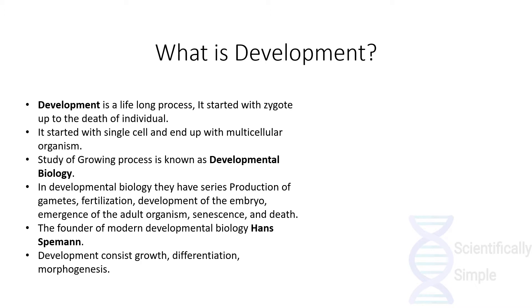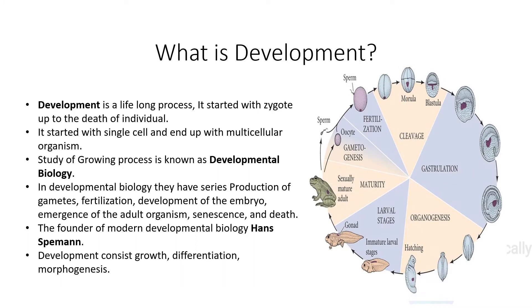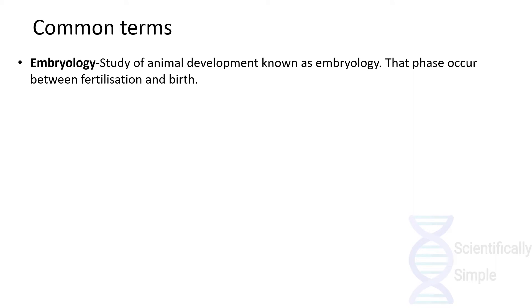Hans Spemann was the founder of modern developmental biology. Development consists of various steps: growth, differentiation, and morphogenesis. As we can see, it begins with gametogenesis and ends in a cyclic format for the beginning of a new life — from gametogenesis through fertilization, cleavage, gastrulation, organogenesis, and various later stages to maturity of an adult, and then beginning again with gametogenesis.